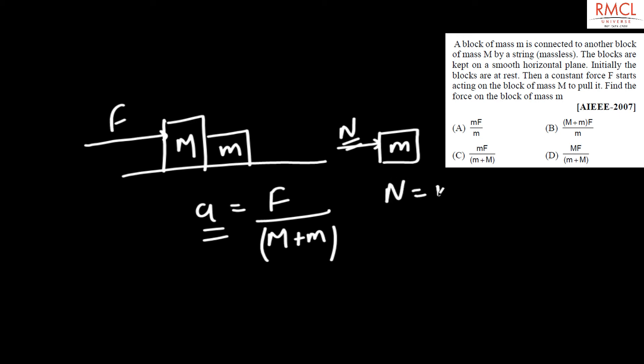So this normal would be equal to mass of small block into acceleration a. This comes out to be small m into capital F upon capital M plus small m.